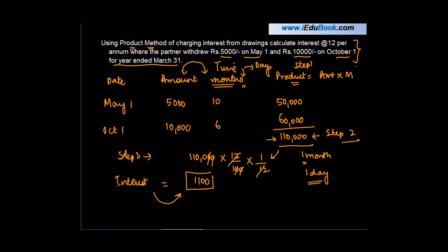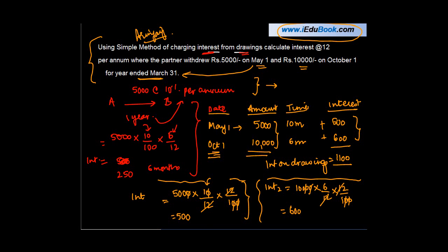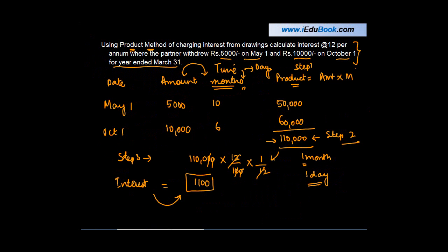If I just take you back to the previous example, using simple method what I got was 500 plus 600 equals 1,100. So what it shows is that with the same data and numbers, the interest calculated both by using the product method or the simple method is the same.